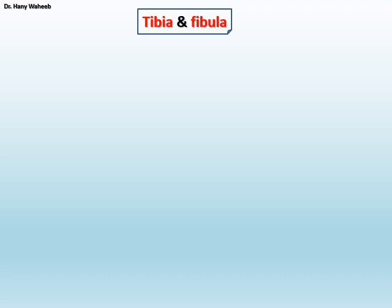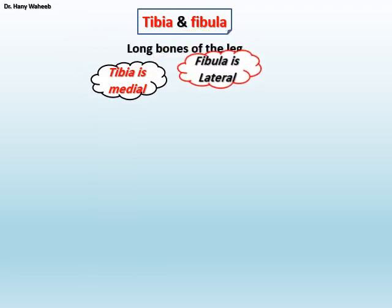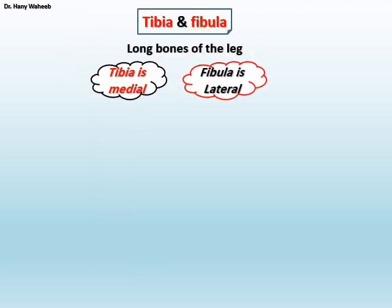Tibia and fibula are long bones of the leg. The tibia is the medial bone of the leg, while the fibula is the lateral bone of the leg.